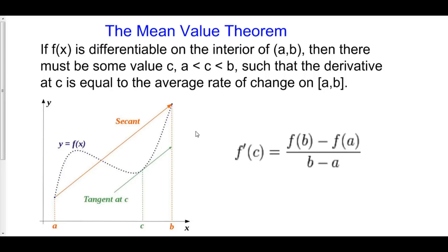But in reality, what this means is that we can find some value c in between a and b such that the derivative at c is equal to the rate of change from a to b. And that is what the Mean Value Theorem states.